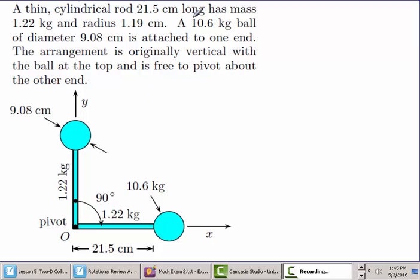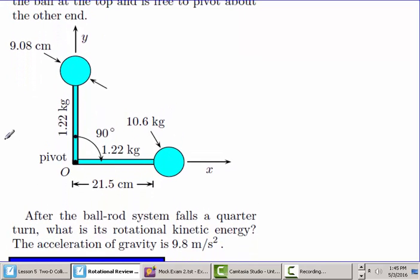At the end of the rod is a 10.6 kilogram ball that has a diameter of 9.08 centimeters. Now the arrangement initially is set as vertical, and then we're going to release it, and it's going to fall down to this position. What we want to find here is to find out what is the rotational kinetic energy once it reaches position number 2. So this is number 2 position, and we'll call this number 1 position here.